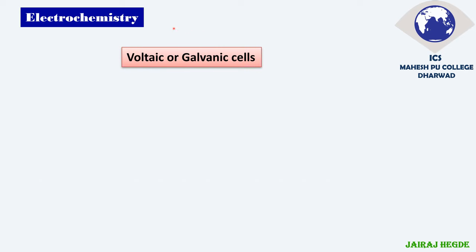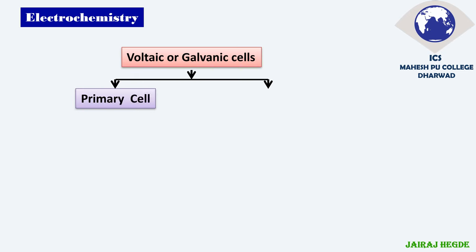Let us look at how they are categorized. The voltaic cells or galvanic cells are categorized into two types: one is primary cell and the other one is secondary cell. These are very important — they usually ask it for two marks: what is primary cell, give an example, or what is secondary cell, give an example.